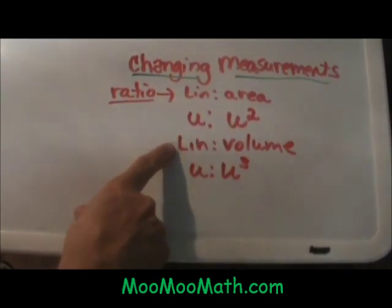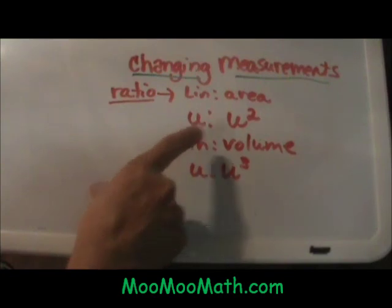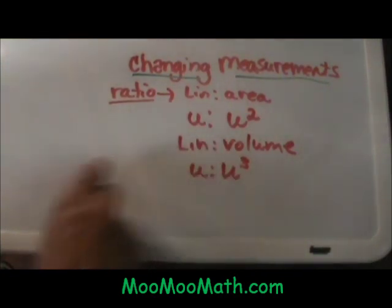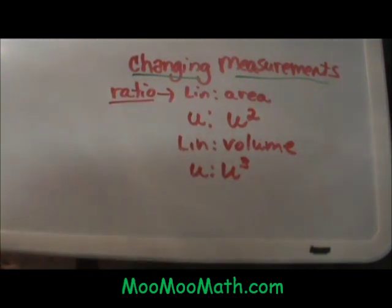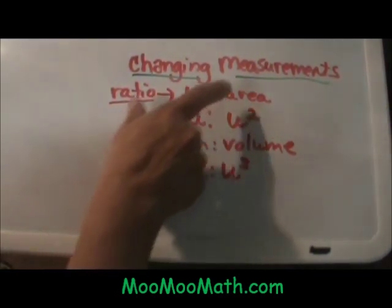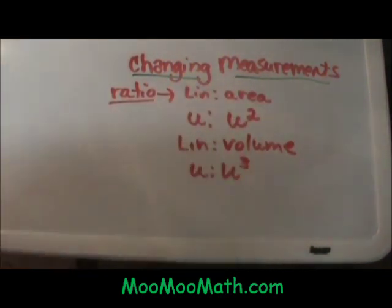Let's say you have a linear measurement and you are changing it to a volume measurement. You would take that unit and cube it because volume is 3 dimensional. You always go back to your original linear measurement, square it for area, and cube it for volume.